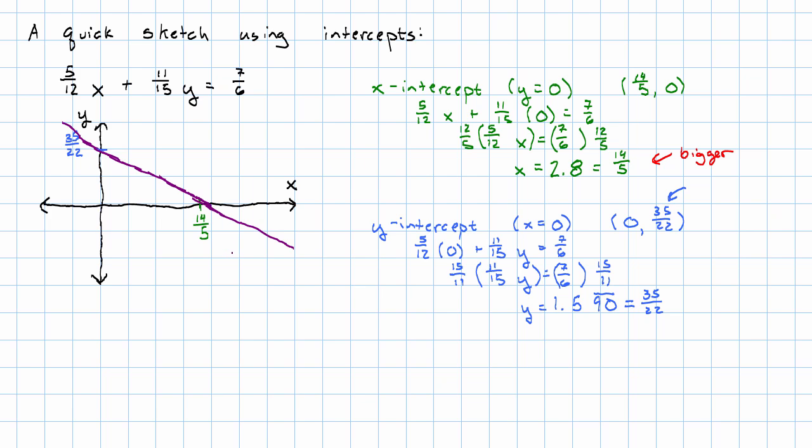We can see what the intercepts are. We can see the general shape of the line, right? We can see that it slopes downward. And for a lot of circumstances, that's probably enough.